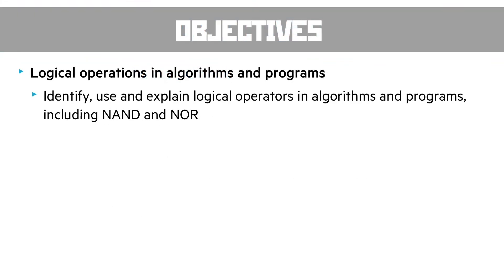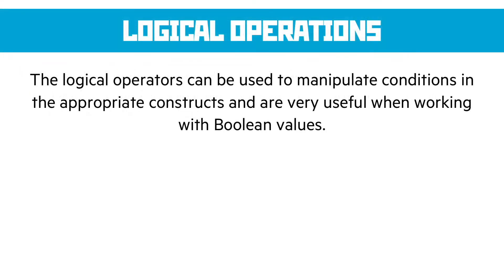The second objective is logical operations in algorithms and programs. We need to identify, use, and explain logical operators in algorithms and programs, including NAND and NOR. NAND and NOR are covered in the logical operations section, so go back and look at those for more detail. Essentially, the only way we use logical operators in code is to manipulate conditions in the appropriate construct.